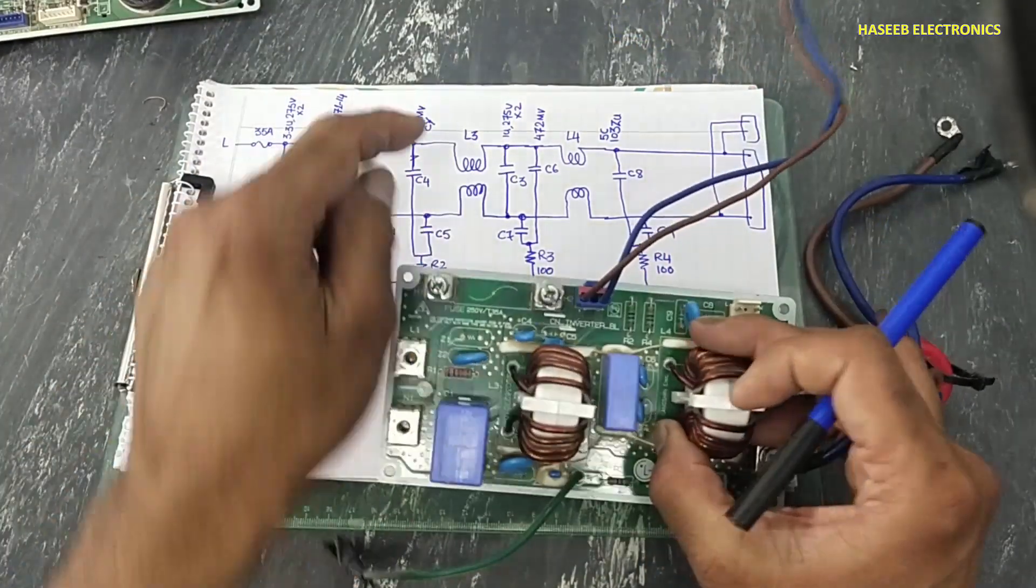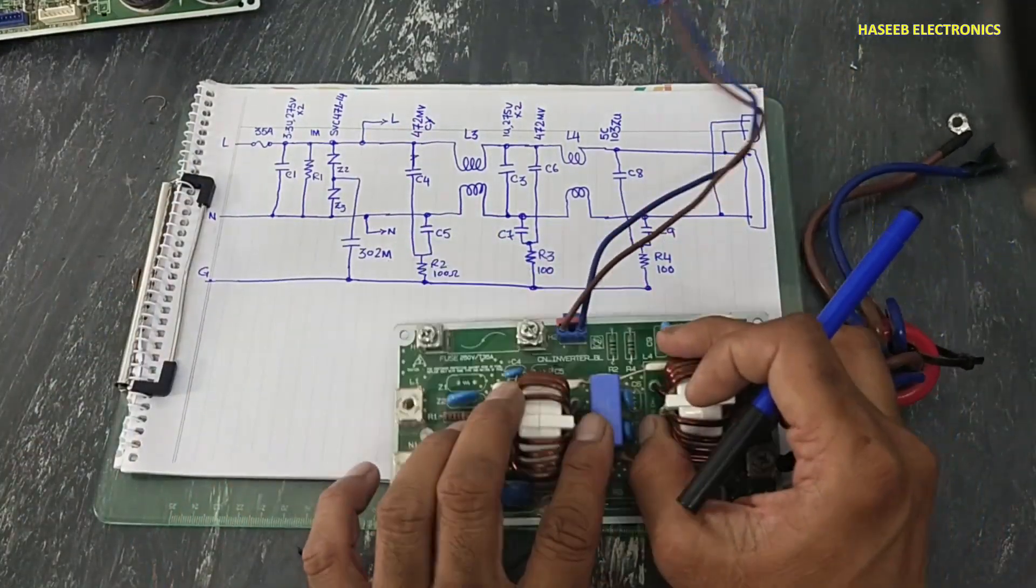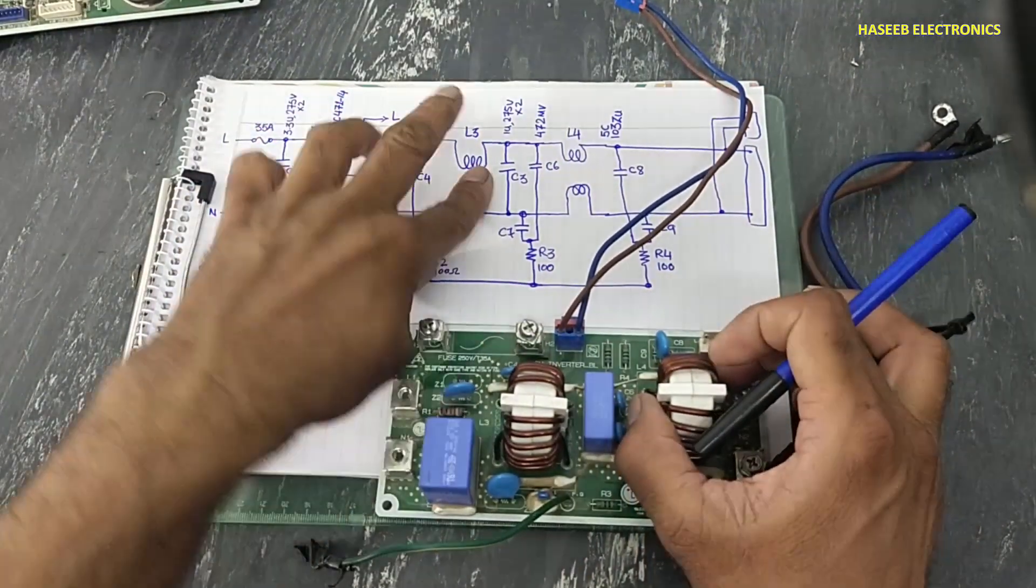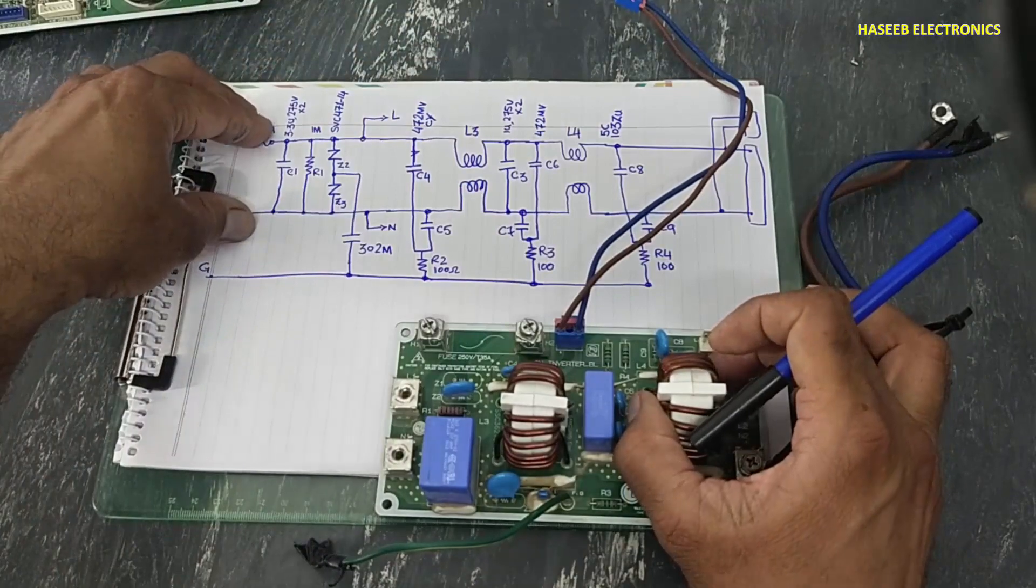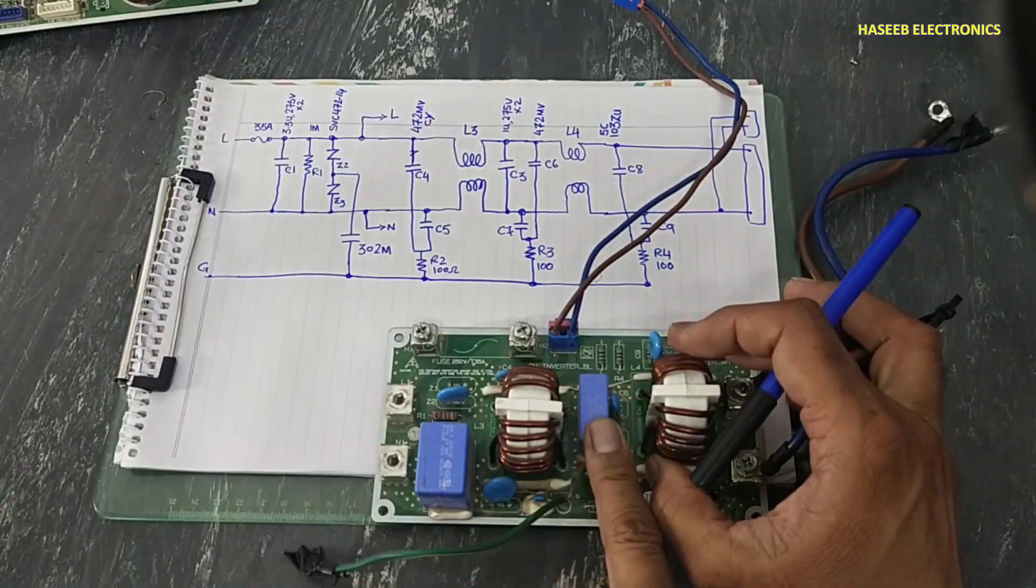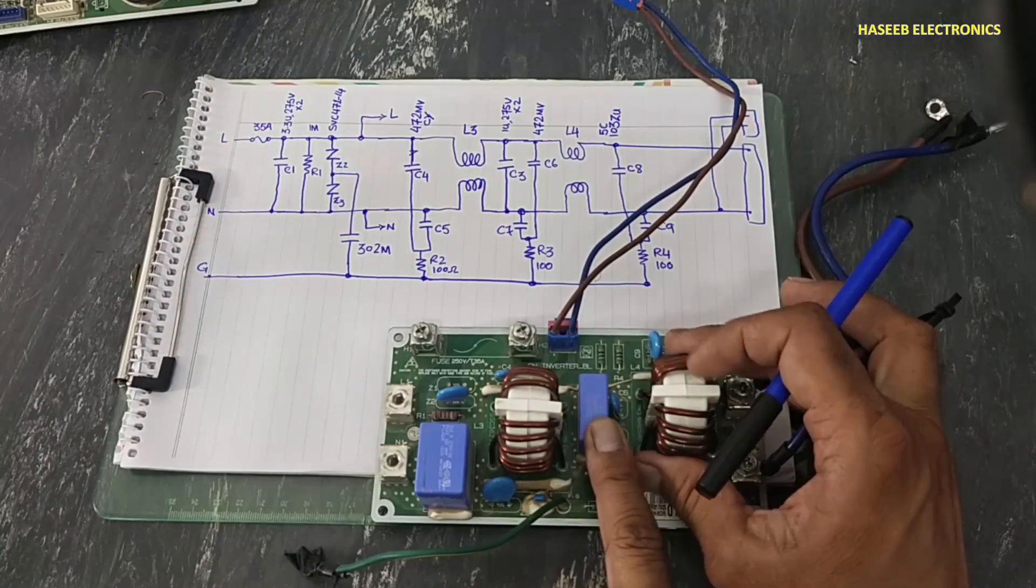Then we have first stage filter L3 inductor, this dual line filter - it will block all differential mode noises. Then we have C3 that is here, one microfarad 275 volt X2 capacitor.